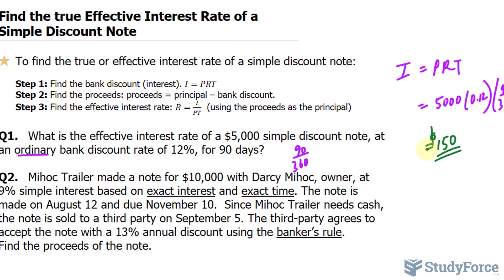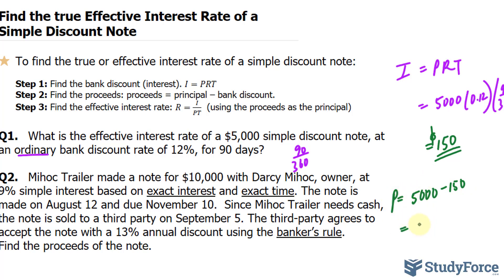Step number two: find the proceeds. Proceeds is calculated by taking the principal minus the bank discount. So the principal is 5,000 minus 150. We'll call proceeds P. This gives us 4,850.